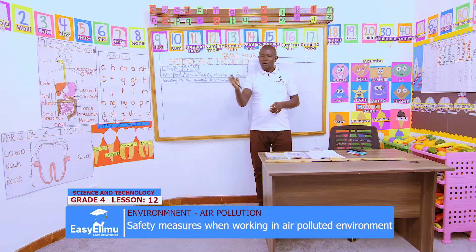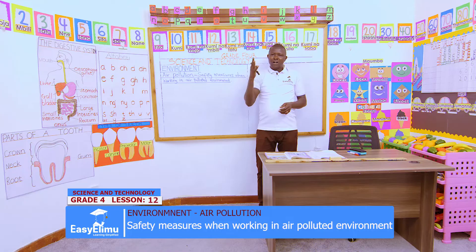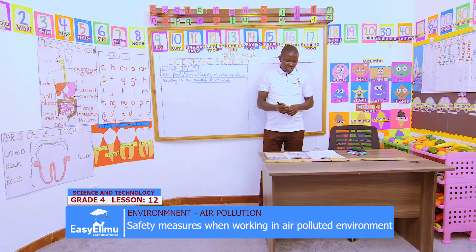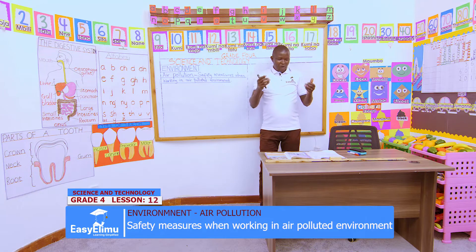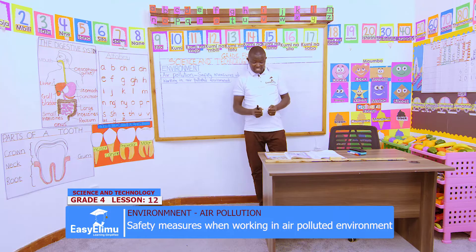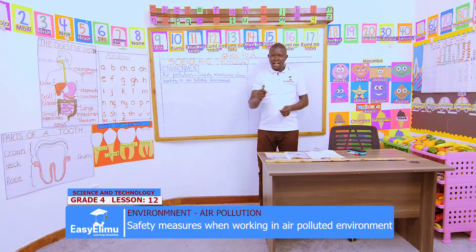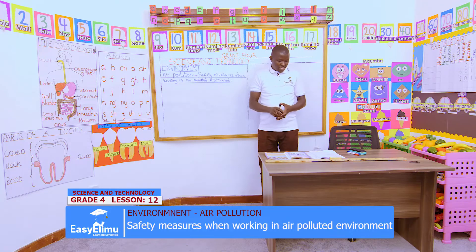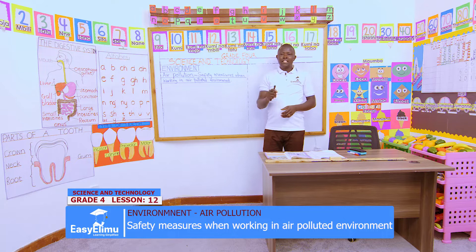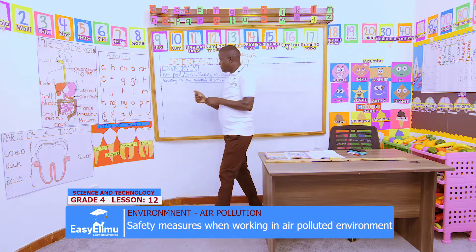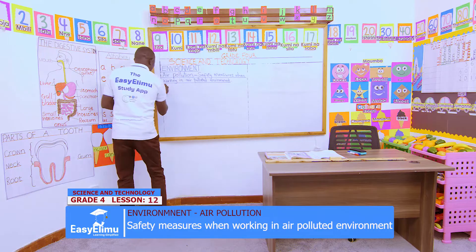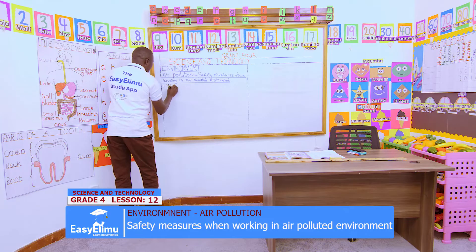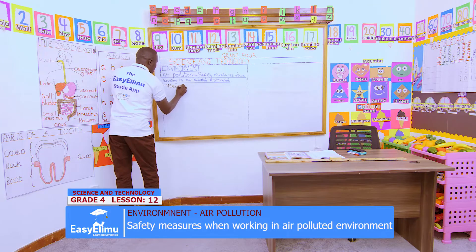Now, in our groups, I have a question for us to answer. How can we reduce this air pollution? The safety measures to take are as follows. Can we discuss them in our groups as displayed in those pictures? Number one: we should wear protective clothes.